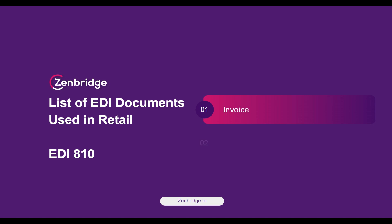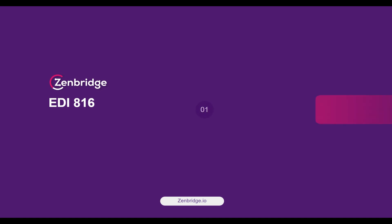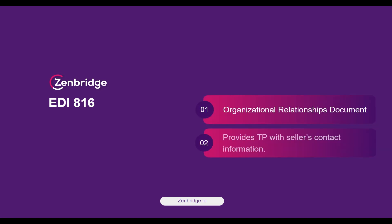EDI 810 is an invoice that is sent by a supplier to a buyer to request payments for goods and services. EDI 816 is an organizational relationship document that provides a trading partner with the seller's address and corresponding codes.